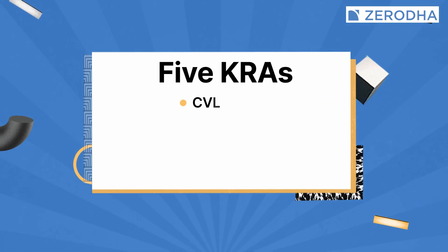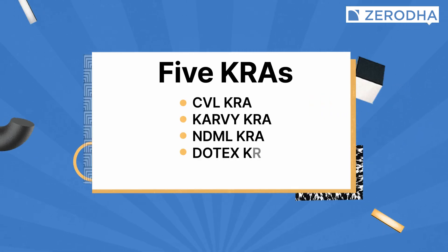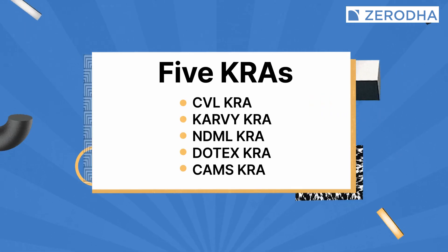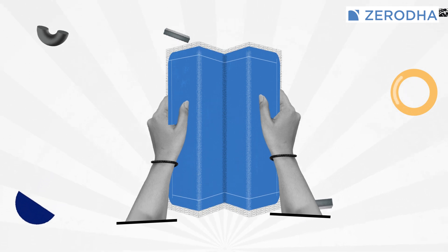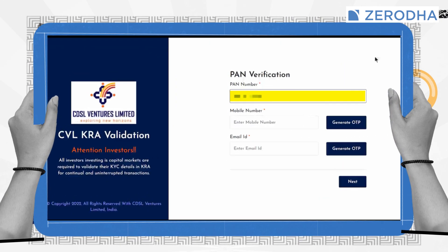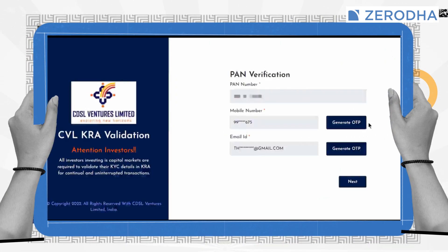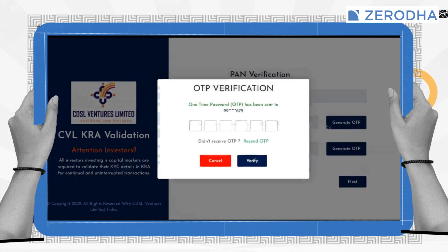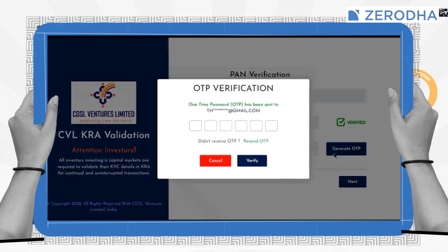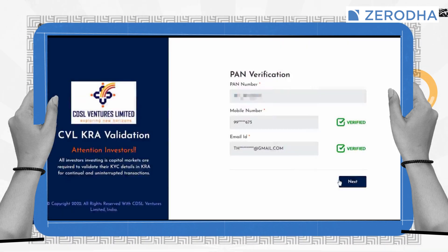There are five KRAs. To update the mobile number and email ID, log into your KRA website. You can check the link to all the KRAs in the description below. Enter your PAN and click outside the box to fetch your mobile number and email ID. Then click on Generate OTP beside the mobile number and email ID field. Enter the OTP and click on Verify. Once both mobile number and email ID are verified, click on Submit and exit to submit the verification request.